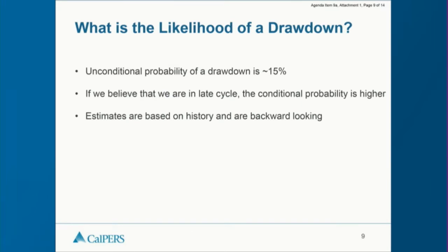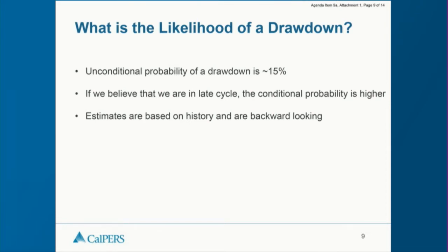What is the likelihood of a drawdown? On average the economic cycle is about 10 years — six or seven good years and two to three very bad years. The unconditional probability of a drawdown in the next 12 months is about 15 percent. However, if we believe we are in late cycle, the conditional probability is much higher: the New York Fed estimates about 30 percent, and the San Francisco Fed's latest estimate is 44 percent. These estimates are based on historical data and are backward-looking — they are only valid if history is any indication.